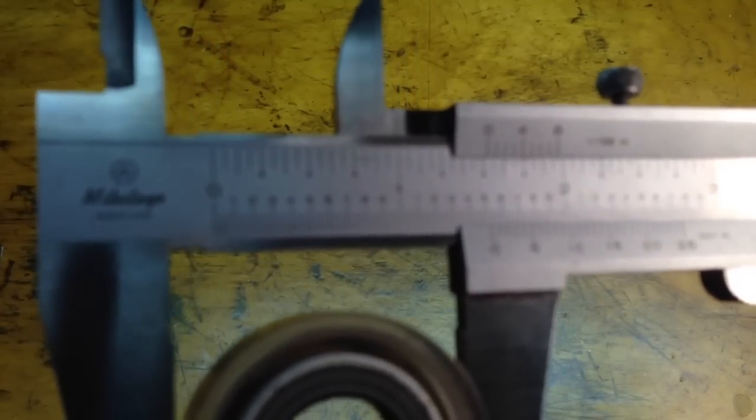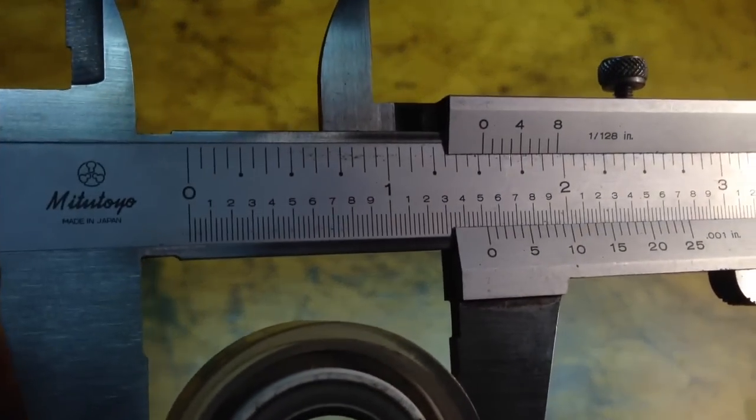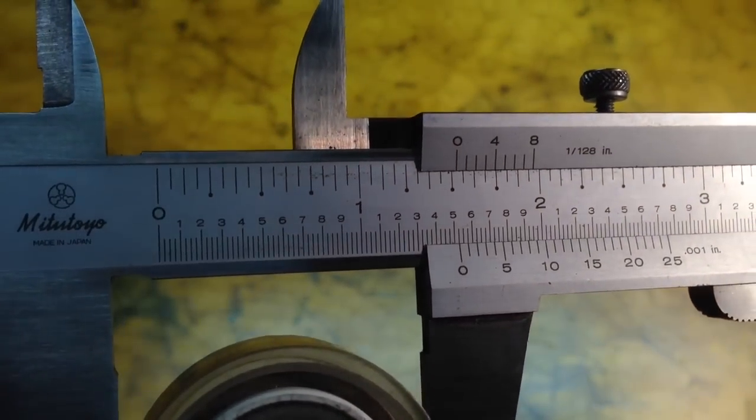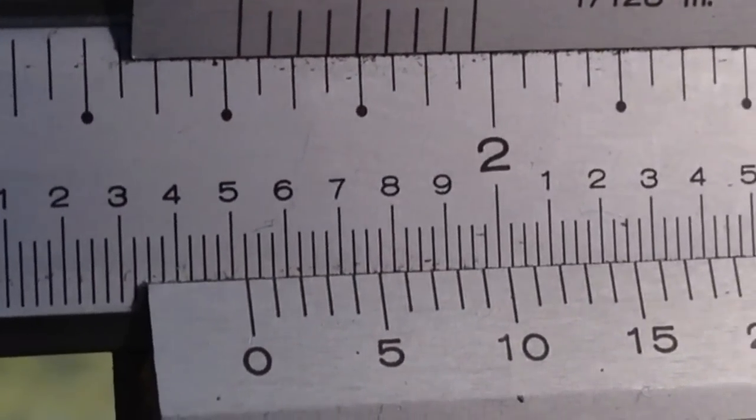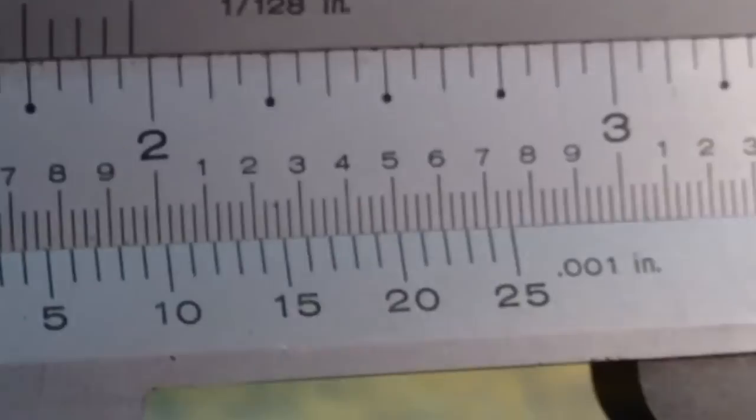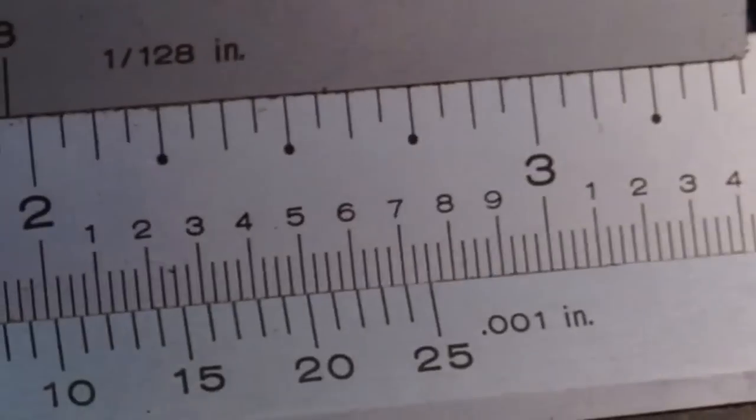The first number to the left of the zero is the one, so we know it's over one inch. The next number down is five, so we know it's over 1.5 inch. Then we're going to break it down into smaller measurements here, and what we have to do is look for a line on the sliding scale that lines up with the fixed scale.